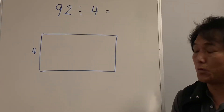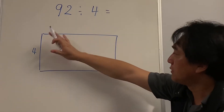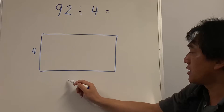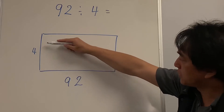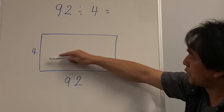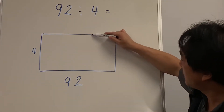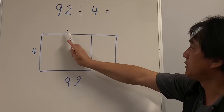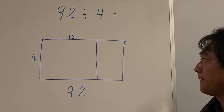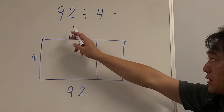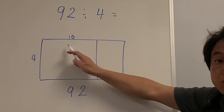Let's do another one: 92 divided by 4. So 92 cupcakes altogether. We're going to put cupcakes in columns of 4s — how many columns can I make? Again, I'm going to divide this into tens and ones. 4 lots of 10 is 40 — yes, I can fit 40 in there. I have 92, so yes, 40 fits.